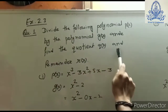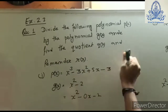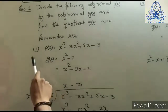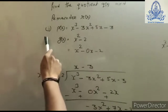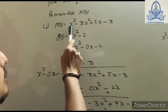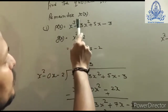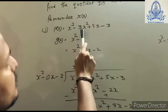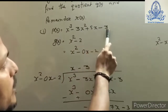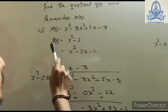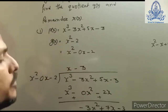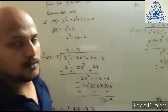For the first question, p(x) is given as x³ − 3x² + 5x − 3, and g(x) is x² − 2.